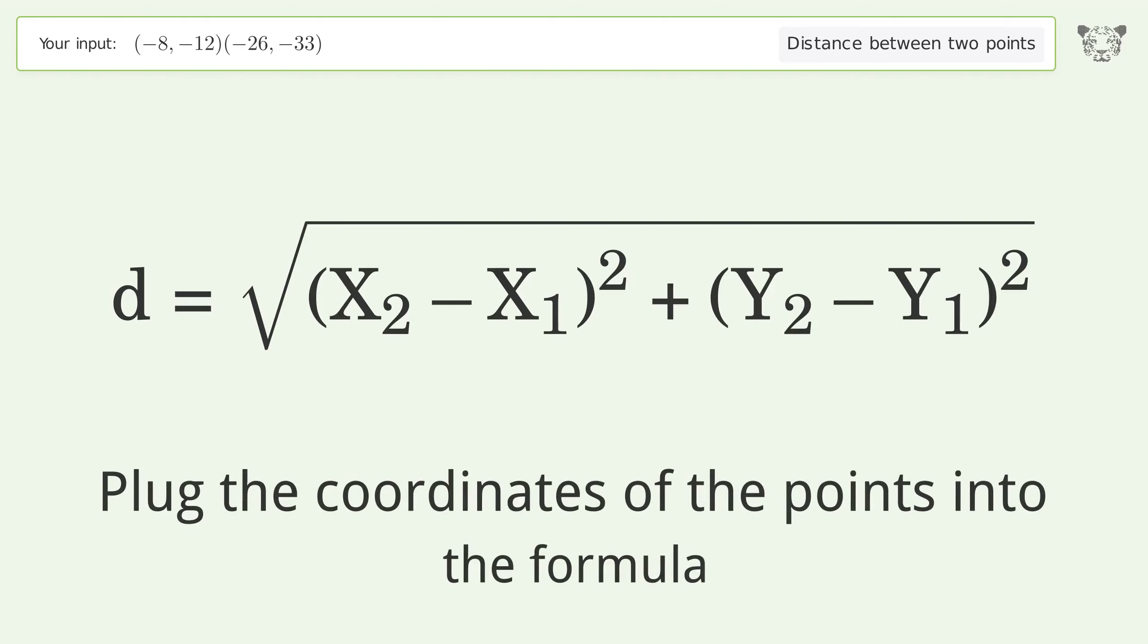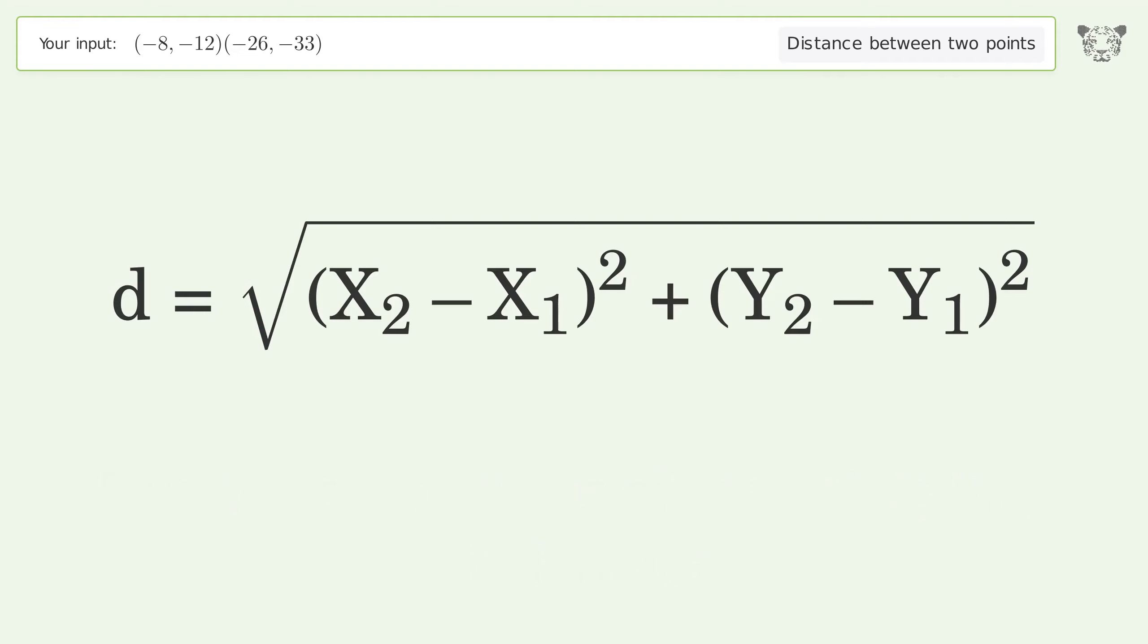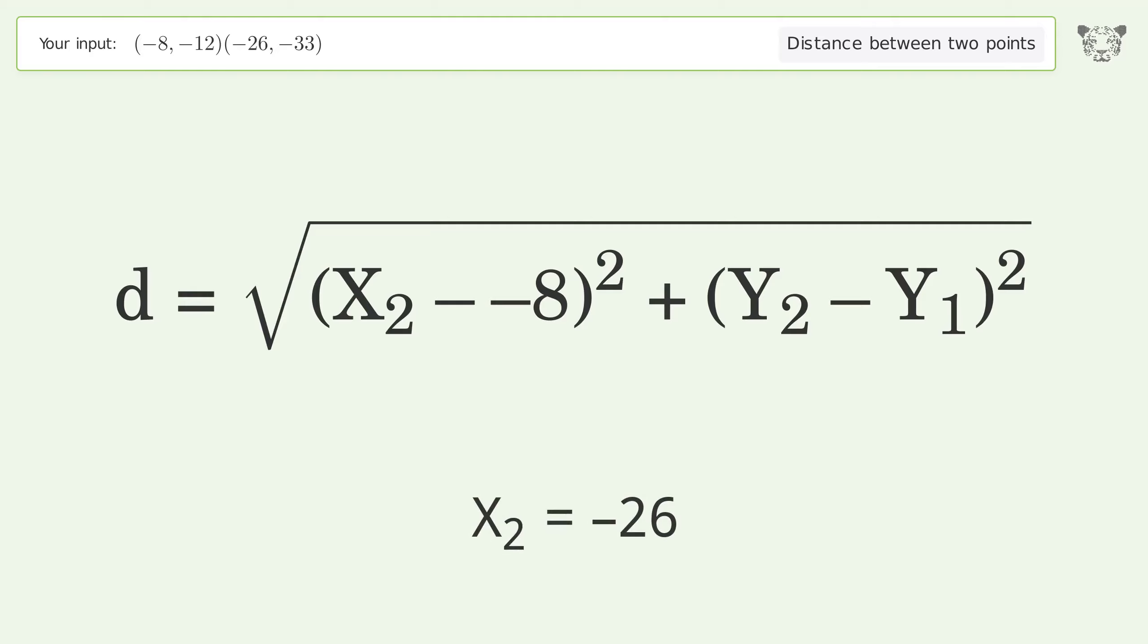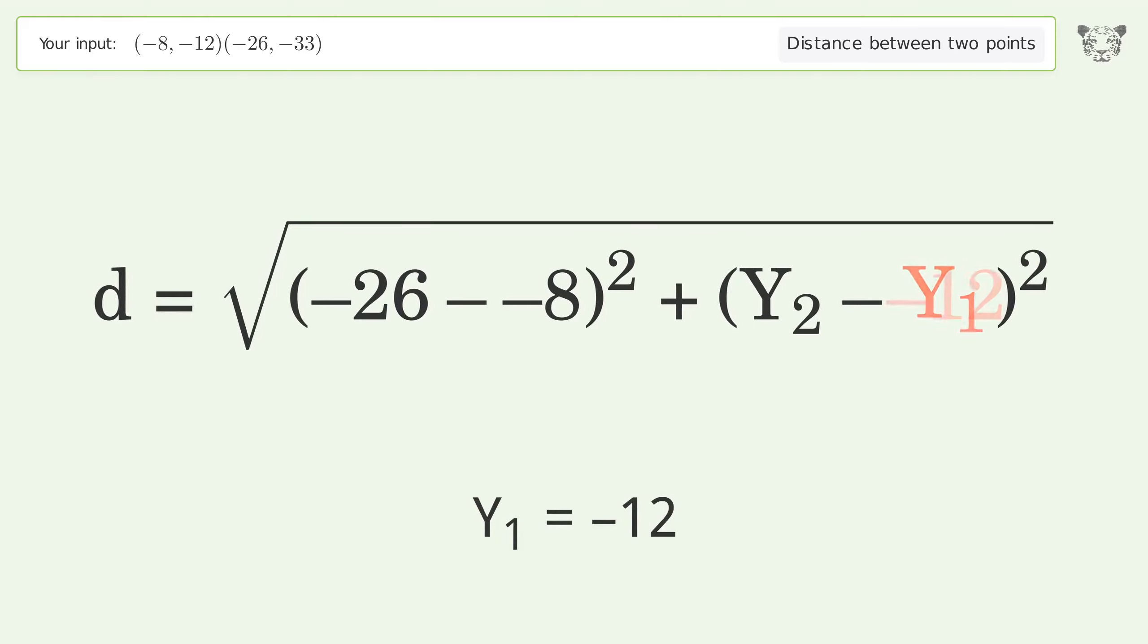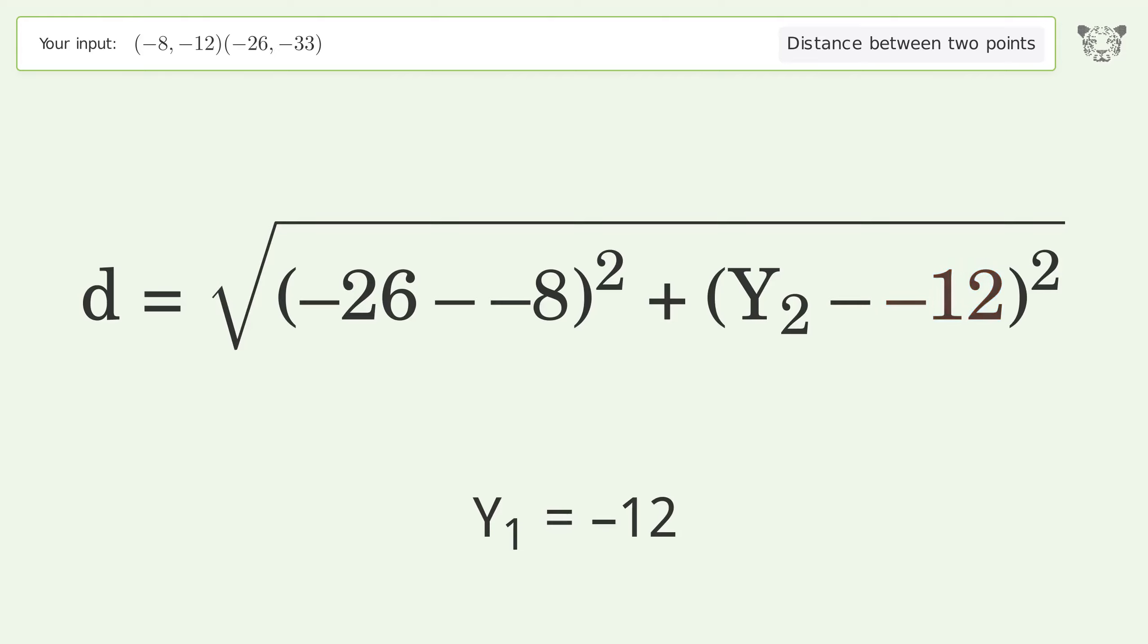Plug the coordinates of the points into the formula: x1 equals negative 8, x2 equals negative 26, y1 equals negative 12, y2 equals negative 33.